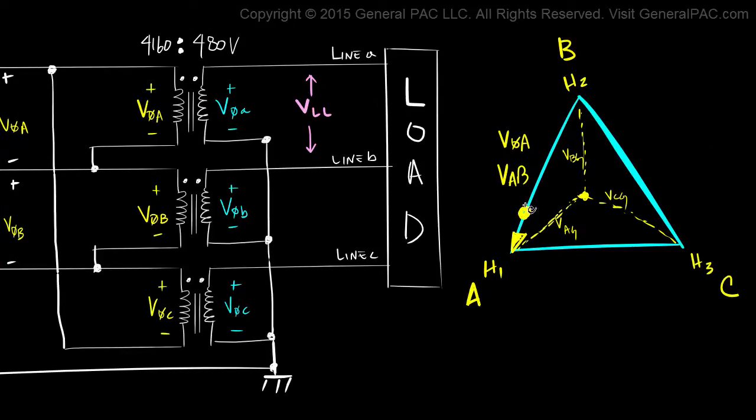Now that we've assumed that this side is V phase A, it becomes very clear that this side right here is VCA and that is equal to V phase C. And then this side right here, that is VBC and that's equal to V phase B.